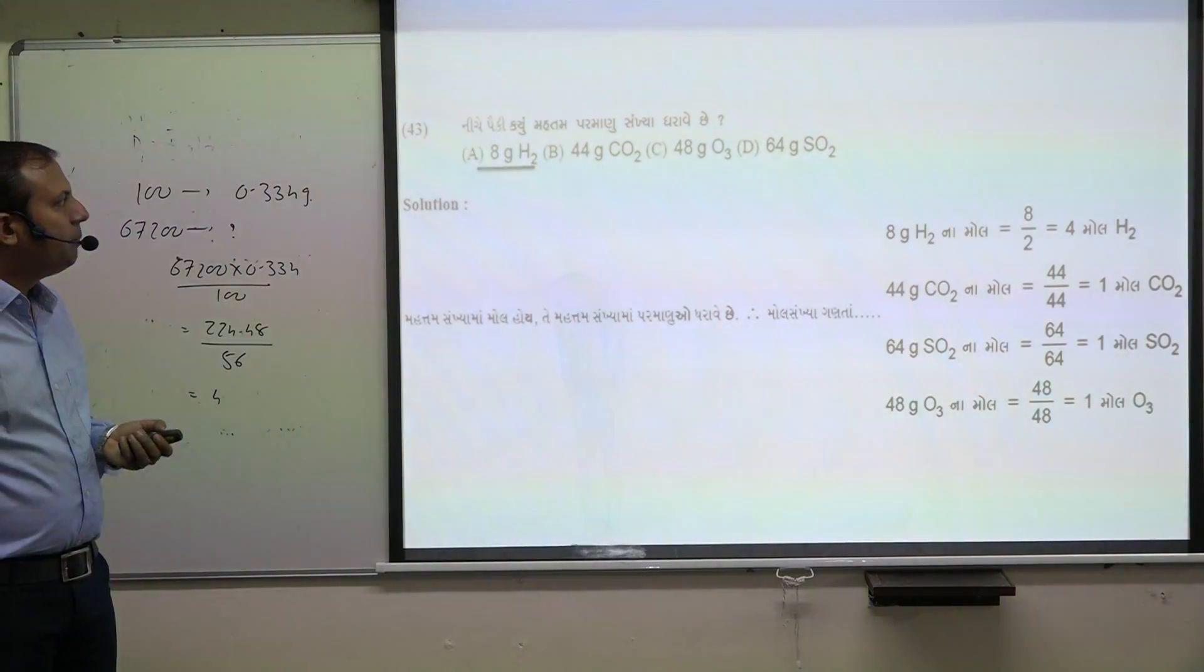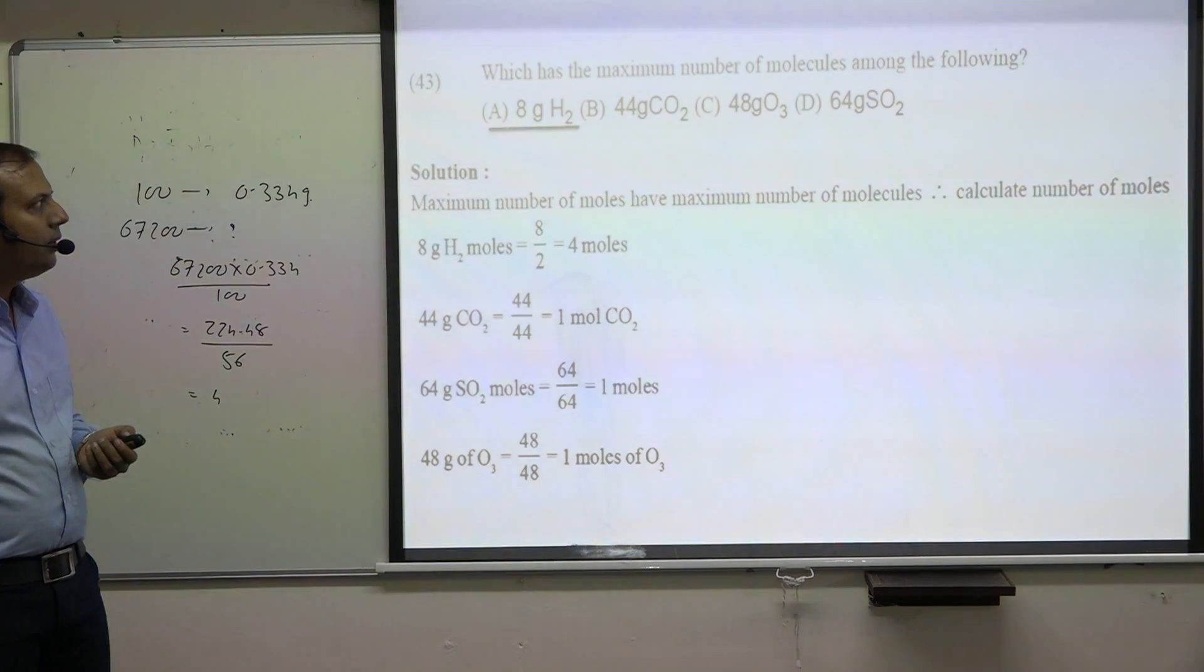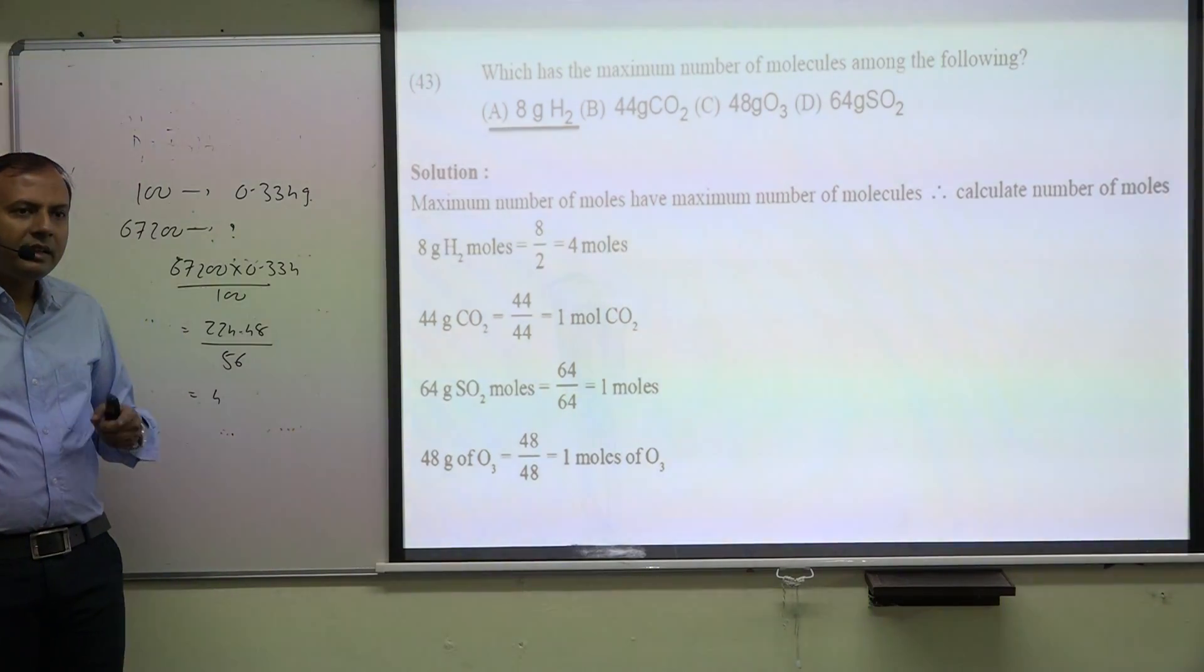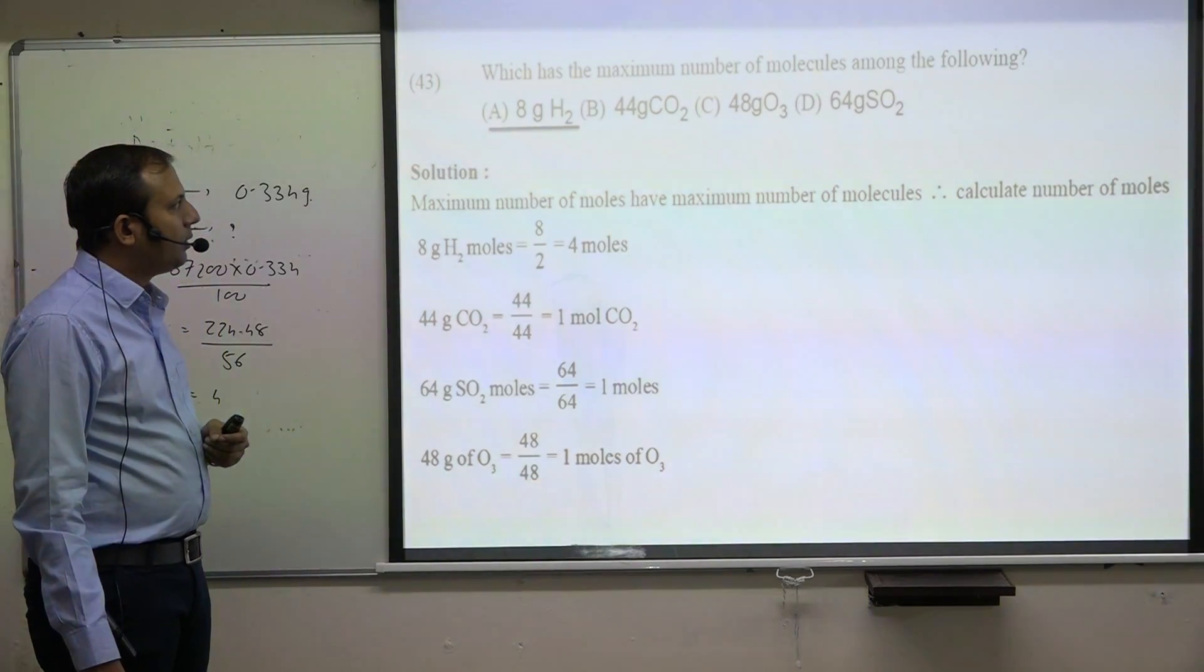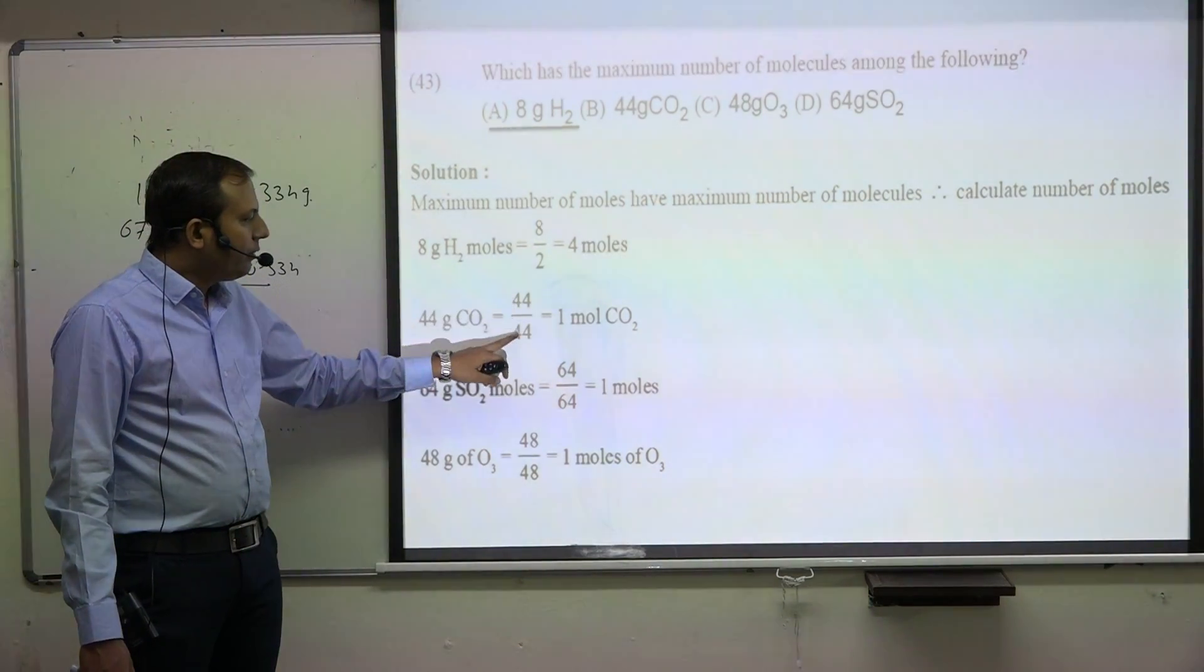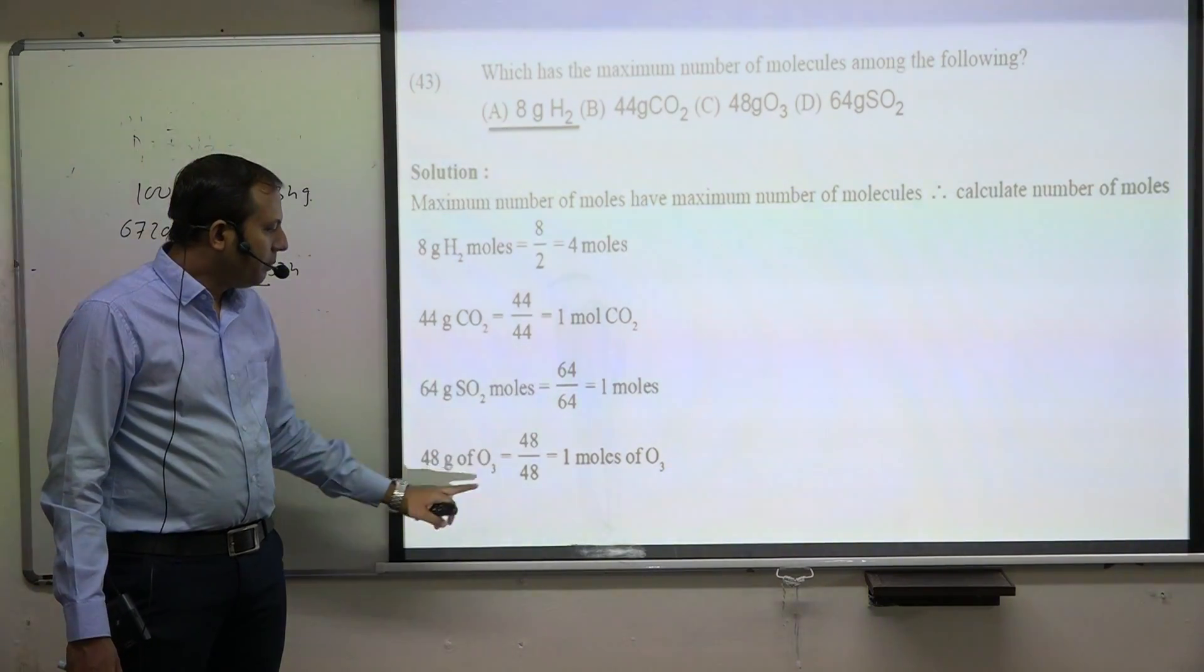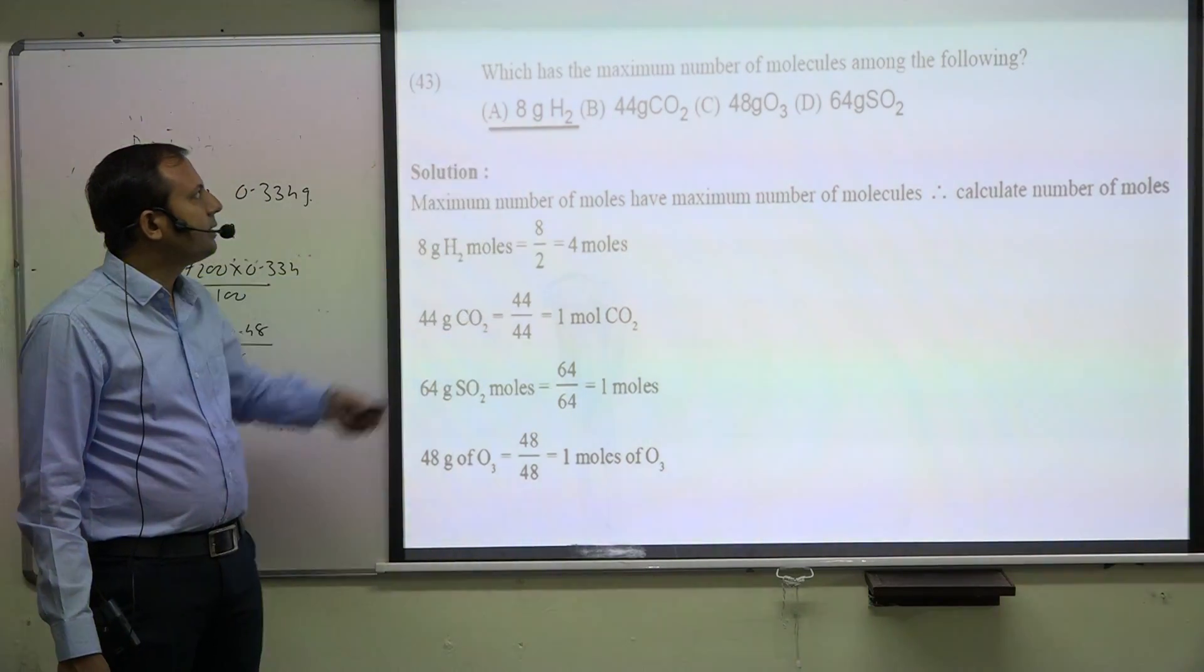Which has the maximum number of molecules among the following? Find the number of moles - highest moles means highest molecules. Calculate: hydrogen is 8 divided by 2 equals 4 moles. CO2 is 44 divided by molecular mass 44 equals 1 mole. SO2 is 64 grams, so 1 mole. Therefore 4 moles is highest.